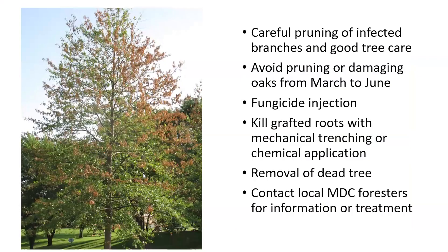Unfortunately, the sad news is that once you have oak wilt there is no cure. All you can do is focus on preventative strategies: controlling the spread and infection, careful pruning, and avoiding damage to oak trees from March to June. You can try fungicide injection, but it's pricey and must be applied every year. You can try to sever grafted roots with mechanical trenching or chemical application to protect healthy trees. Remove dead trees as soon as possible, because even a dead oak wilt–infected tree can serve as an inoculum source and spread the disease.